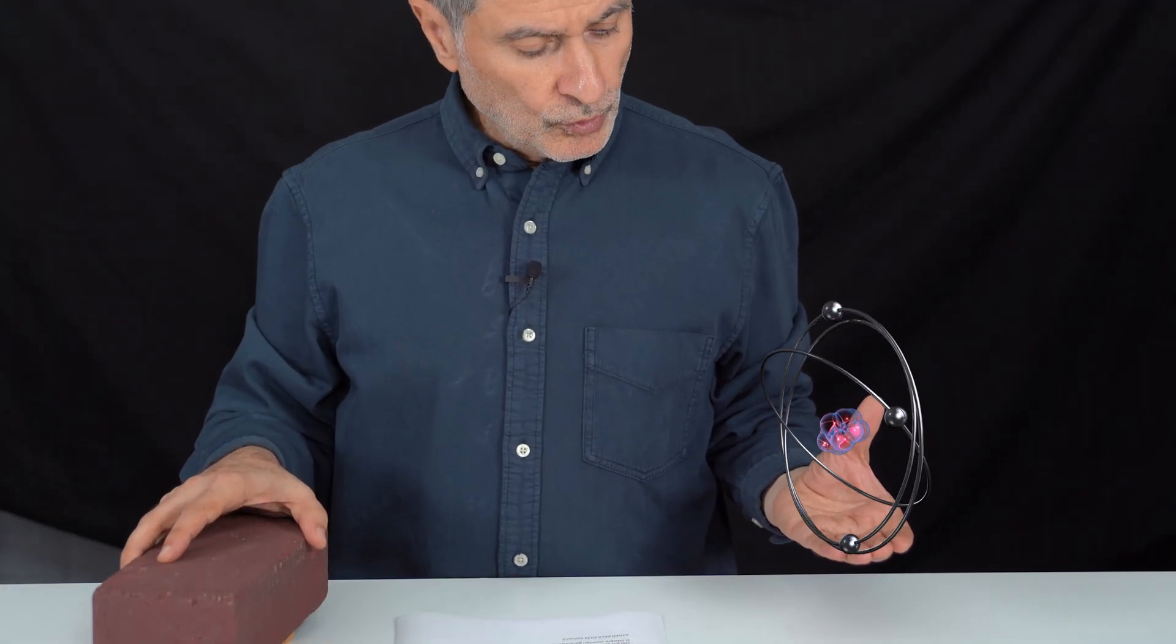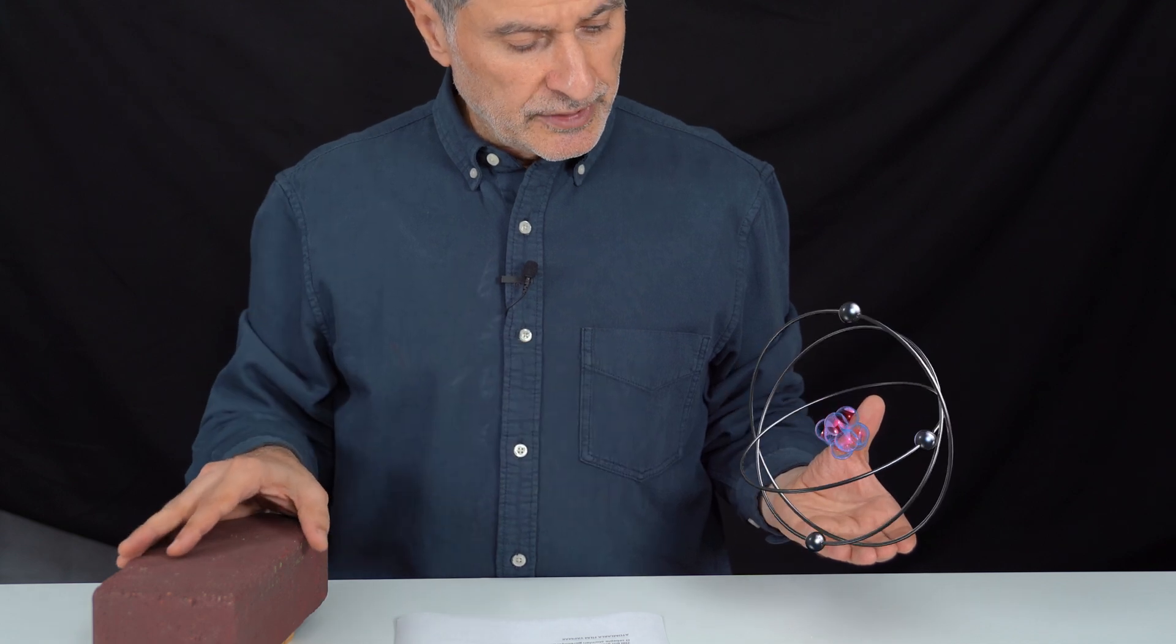This is a brick, the smallest building block of most houses and apartments. This is the model of an atom. There are protons and neutrons in the center. Electrons revolve around it.